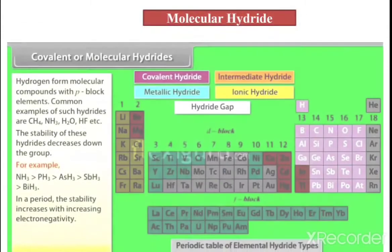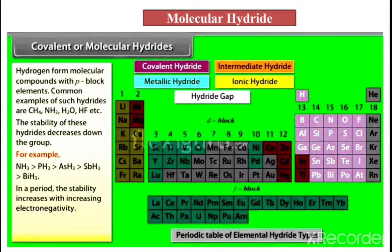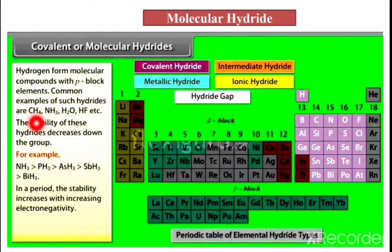First, molecular hydrides — also called covalent hydrides. Hydrogen forms molecular compounds with the P-block elements. Common examples of such hydrides are CH4, NH3, H2O, and HF. That means hydrogen forms compounds with the P-block elements.